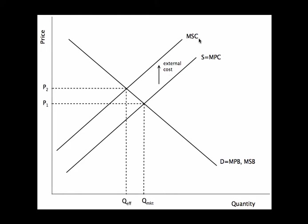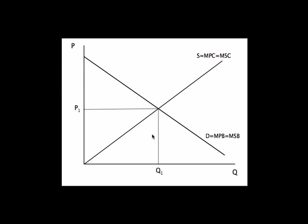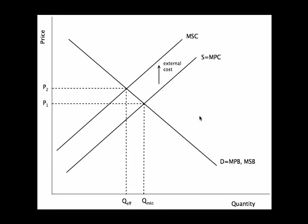It's always efficient to account for all the social costs and social benefits — which is what we were doing originally with no externalities. The reason why we were able to say it was efficient was because marginal social cost equals marginal social benefit at that point, or in other words, we're producing all the units for which marginal social benefit is greater than marginal social cost. It's always looking at social costs and social benefits that determines the efficient allocation of resources. In this case, there's no difference between private and social on the demand side, so the efficient point is where marginal social benefit equals marginal social cost.